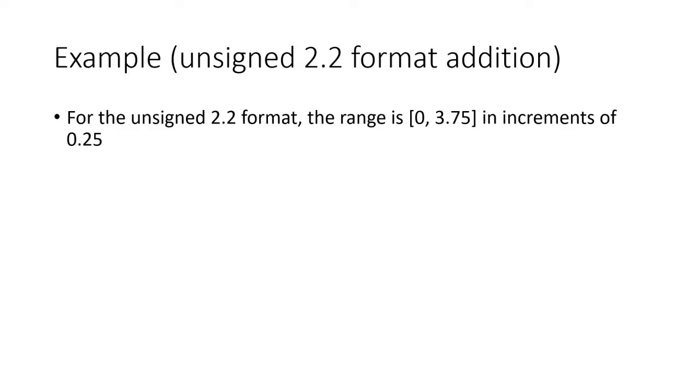We will first show an addition in unsigned 2.2 fixed point format. In this format, the valid fixed point numbers are in the range 0 to 3.75 in increments of 0.25 or a quarter. Consider the two numbers A and B. A is equal to 1.5 and B is equal to 2.75. The sum of A and B is 4.25 with the bit pattern 100.1. Notice the result is overflowed for this format, as indicated by the highlighted high bit. Next, we will show two possible methods to handle this behavior.